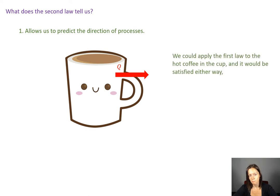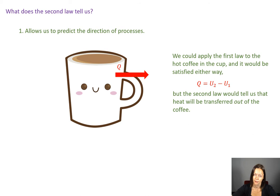But if you applied the first law, the first law would just say everything was okay. There's an energy balance. Q is equal to delta U. No problem. Everything looks okay either way. But the second law is the one that tells us that heat is going to be transferred out of the coffee as opposed to keeping on getting hotter and hotter and hotter.